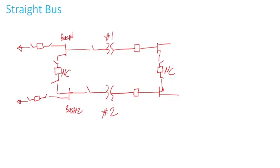In this video I'll continue the discussion on parallel transformers. We'll see different topologies where you want to make sure you don't have circulating current. You have transformer one and transformer two — transformer one is connected to bus one, transformer two is connected to bus two on the high side.